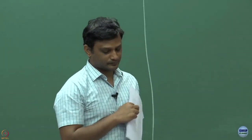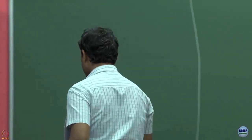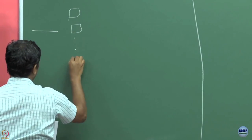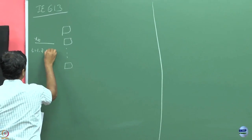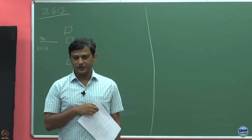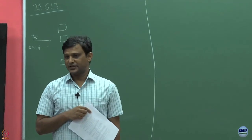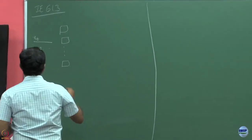Let us continue our discussion on multi-arm contextual bandits that we started. Just a quick recap on what we did. We have in every round a context revealed to us, and looking at this the learner has to figure out which action to play. We said that we have about k actions.